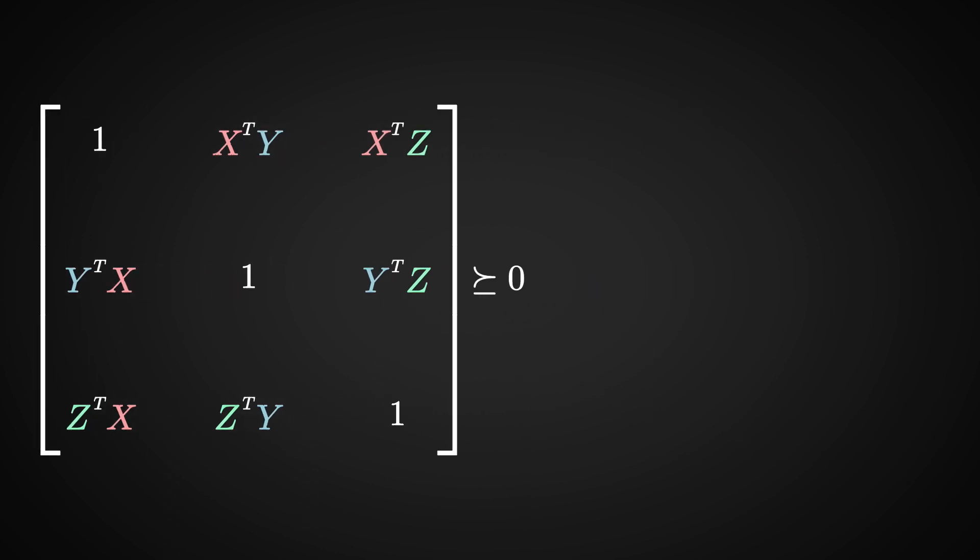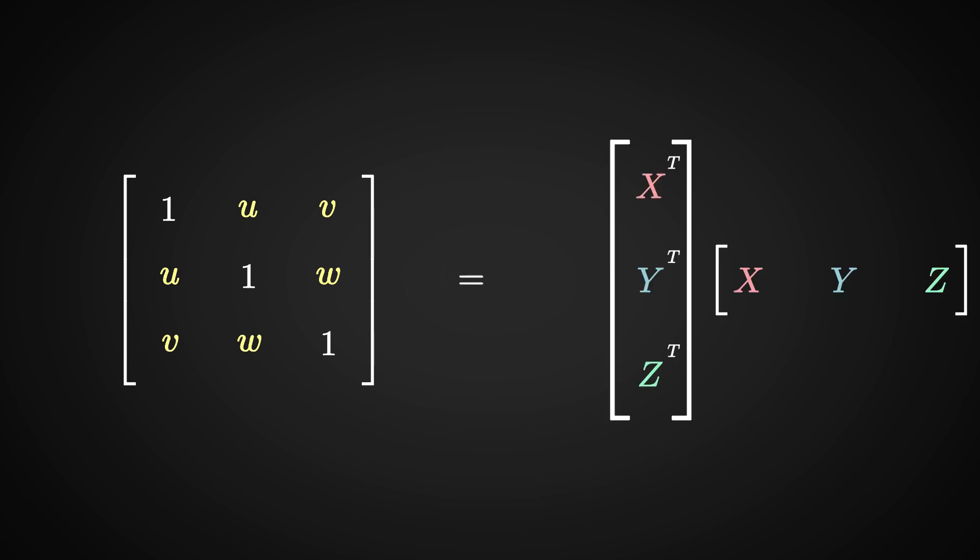This also goes in the other direction. If you take any 3x3 positive semi-definite matrix with ones on the diagonal, you can decompose it as some matrix times its transpose, and read off the unit vectors x, y, and z from this matrix.